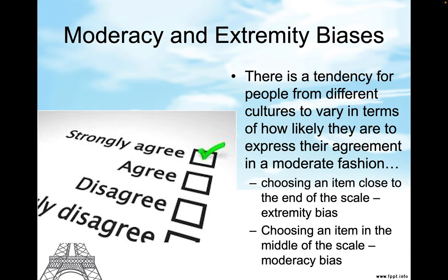There's a tendency for people from different cultures to vary in terms of how likely they are to express their agreement — choosing an item close to the end of the scale is called extremity bias, while choosing an item in the middle of the scale is known as moderacy bias. Some people either strongly agree or strongly disagree; other individuals will be somewhere in the middle. For that reason, a lot of surveys that have these types of answers aren't very accurate.